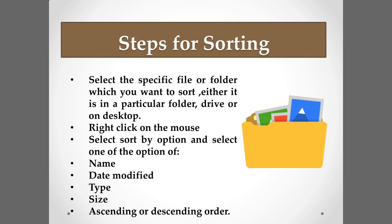When you click on Sort By, the options are: name, date modified, type, size, ascending, or descending order. Name refers to the file or folder name. Date modified means when the file was created or last edited. Type means what kind of file it is — Word, Excel, video, or audio. Size means how many MB or GB the file contains. Ascending and descending let you order files from smallest to largest or vice versa.